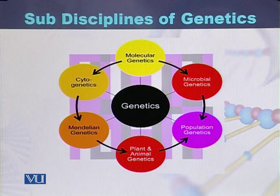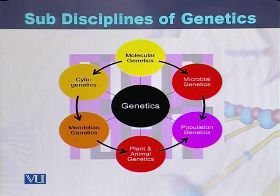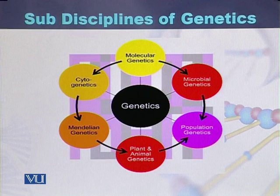Molecular genetics deals with genetics at the molecular level. Cytogenetics is where we study genetics through chromosomes and the banding pattern of the chromosomes — this branch of genetics is called cytogenetics. In the case of Mendelian genetics,